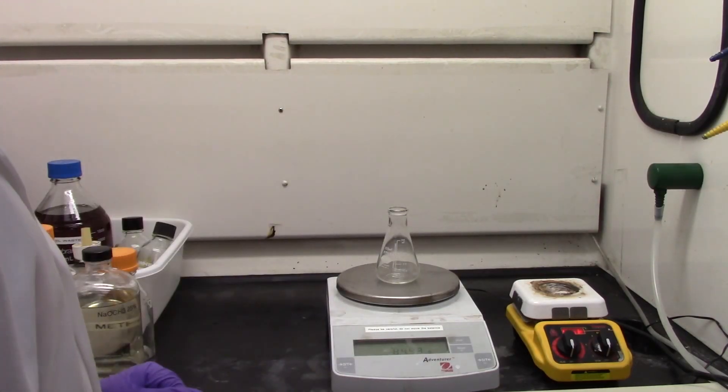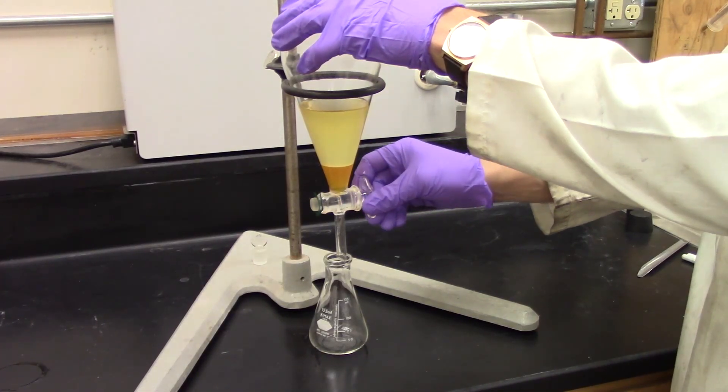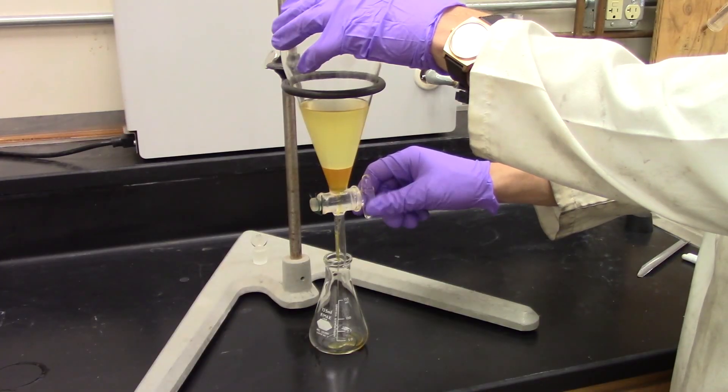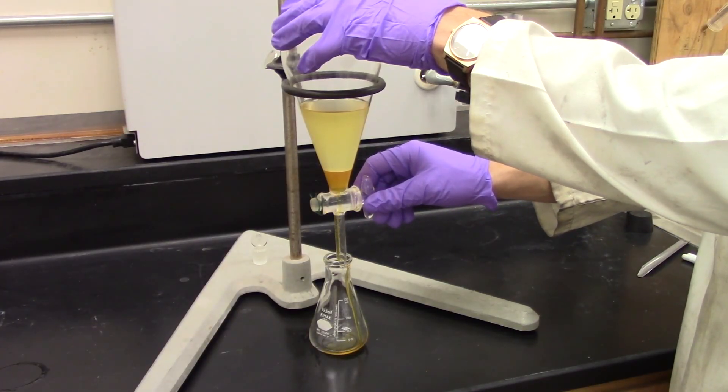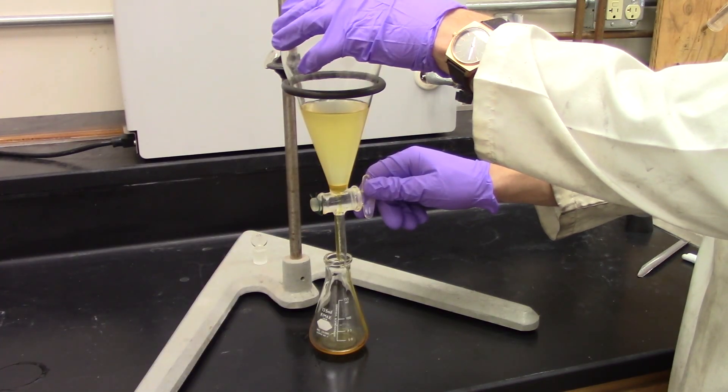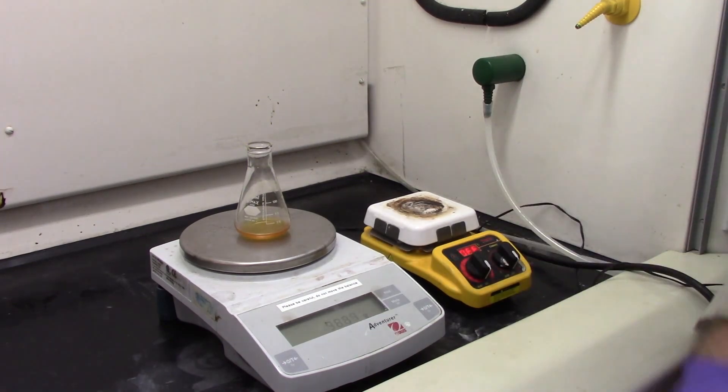Weigh a 125 mL flask and record the weight. Carefully remove the lower layer of glycerol from the bottom of the funnel into this pre-weighed flask. The upper layer is the biodiesel phase, and the separated lower layer is the crude glycerol with some catalyst in it. Weigh the flask with separated glycerol and record the net weight into the data table.